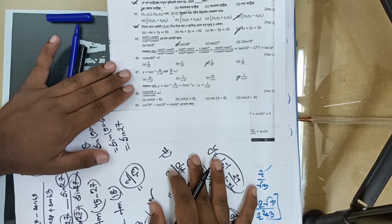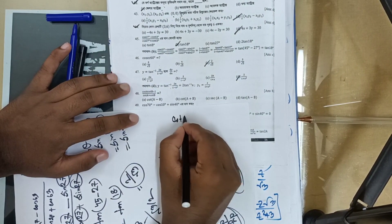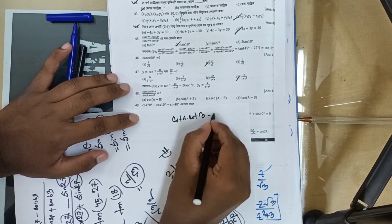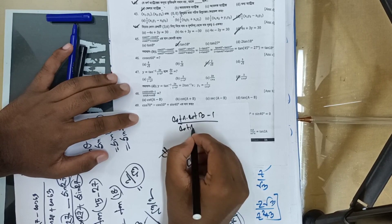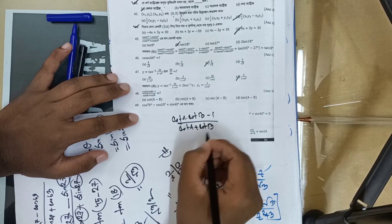For the 48th number: cot a · cot b minus 1 divided by cot a plus cot b — we can use the standard formula here. The answer follows from the cot addition formula.